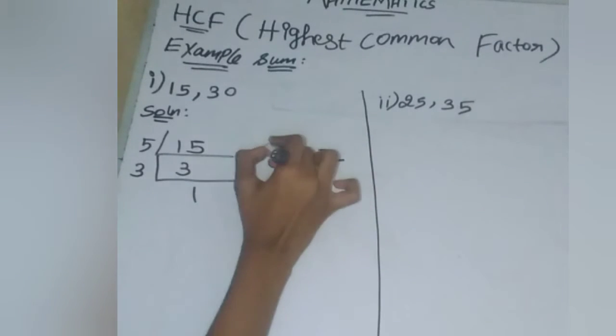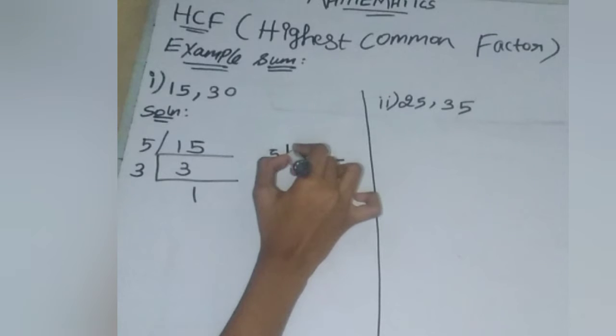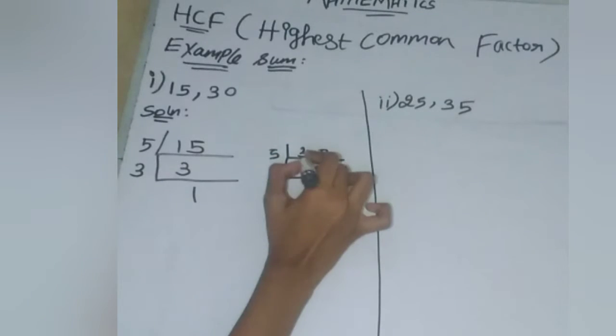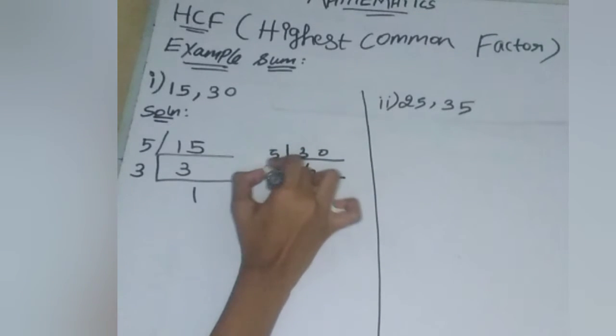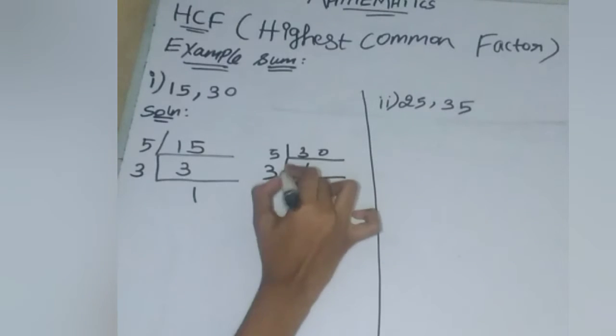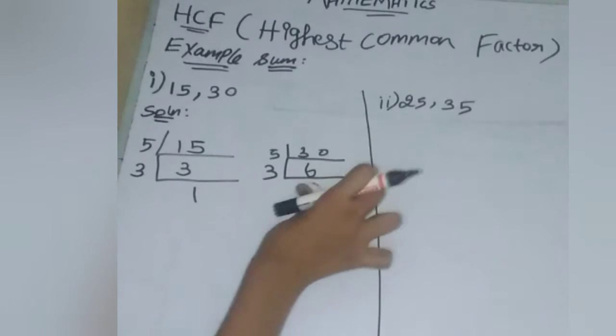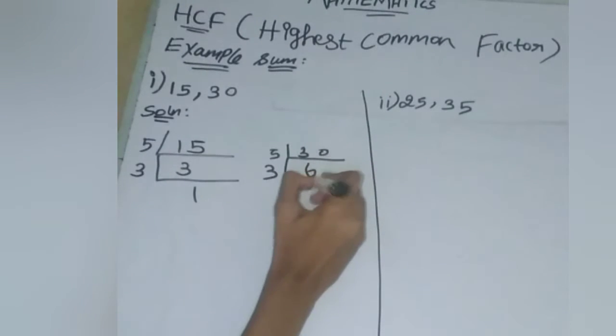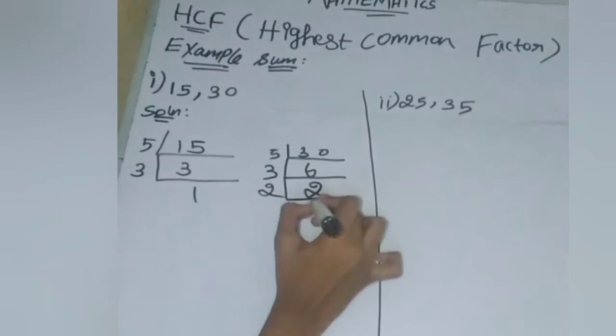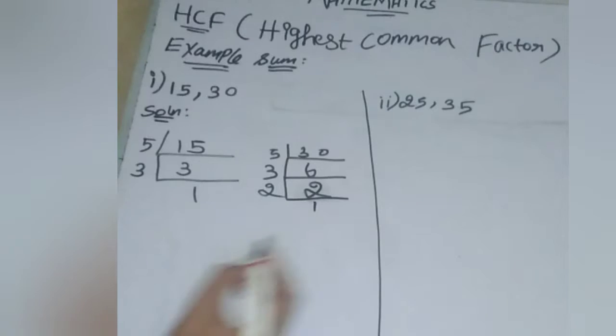Now for 30, from the 5 times table, 5 times 6 equals 30. From the 3 times table, 3 times 2 equals 6. From the 2 times table, 2 times 1 equals 2.